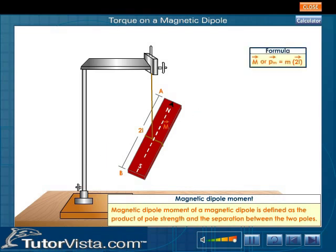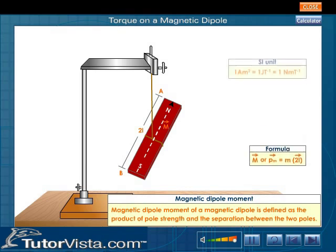Vector M or Vector PM is equal to M into Vector 2L. Its SI unit is Ampere meter square or Joule per Tesla or Newton meter per Tesla.